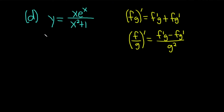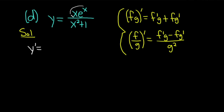Part d: y equals x times e to the x over x squared plus 1. For this one, we're going to use the quotient rule, but we're also going to use the product rule. So y prime is equal to... our top function is x e to the x, and our bottom function is x squared plus 1. The derivative of the top requires a product rule. Think of x as first, e to the x as second: derivative of the first is 1 times e to the x, plus the first which is x, times the derivative of the second which is e to the x. So the derivative of the top is e to the x plus x e to the x.